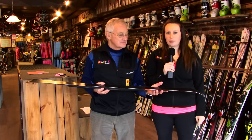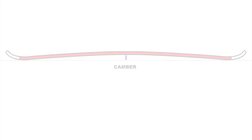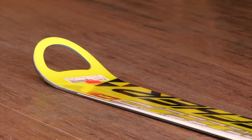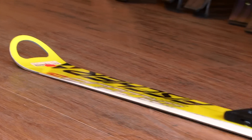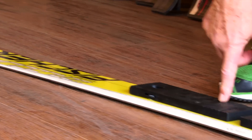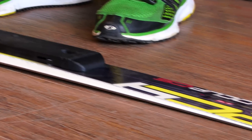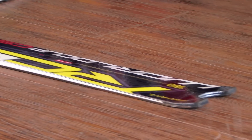Another important concept in determining ski geometry is camber and rocker. The simplest way to explain camber is if you were to take a piece of string from the tip of your ski to your tail and measure the distance between the string and the center of the ski — that will determine the amount of camber. As you can see, both the tip and the tail are in contact with the floor and the center is not. The distance between the floor and the ski is your camber.